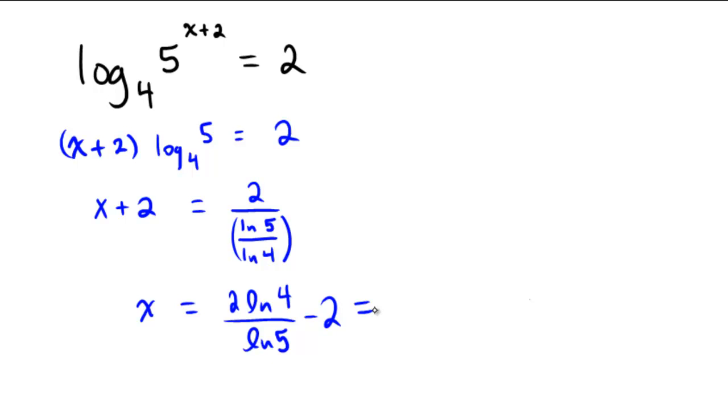And now I'm just going to grab a calculator so I can see what this exact answer is as an approximate decimal. 2 ln 4 divided by ln 5 minus 2, and to 2 decimal places I get negative 0.28, and that's rounded to 2 decimal places.